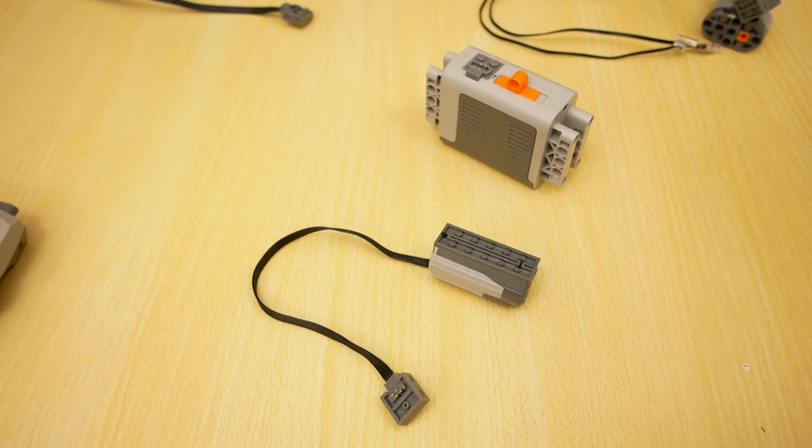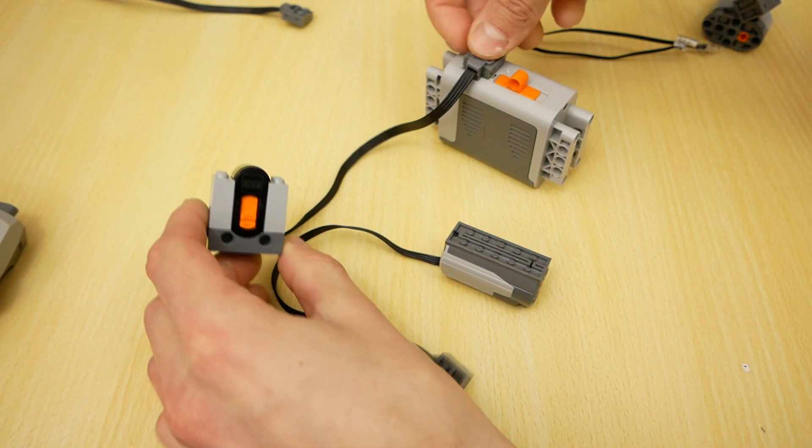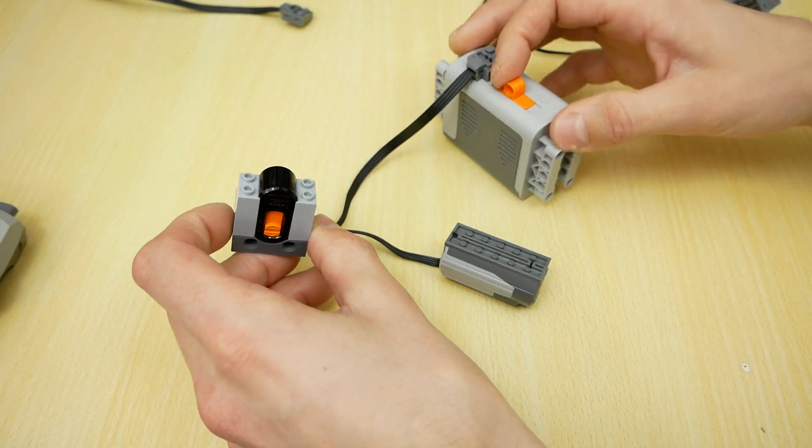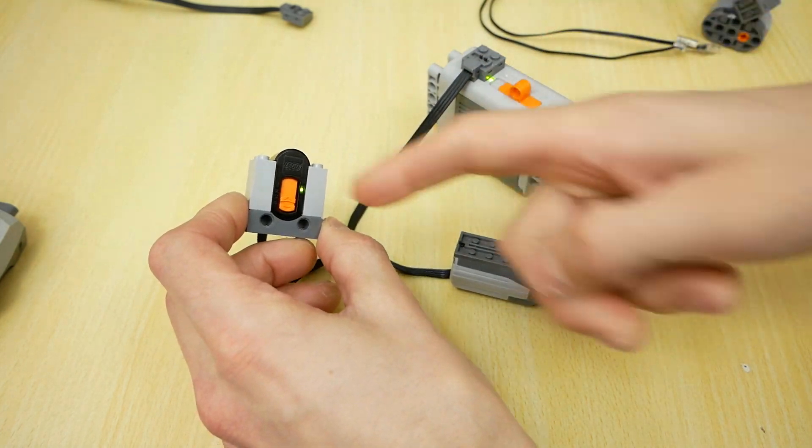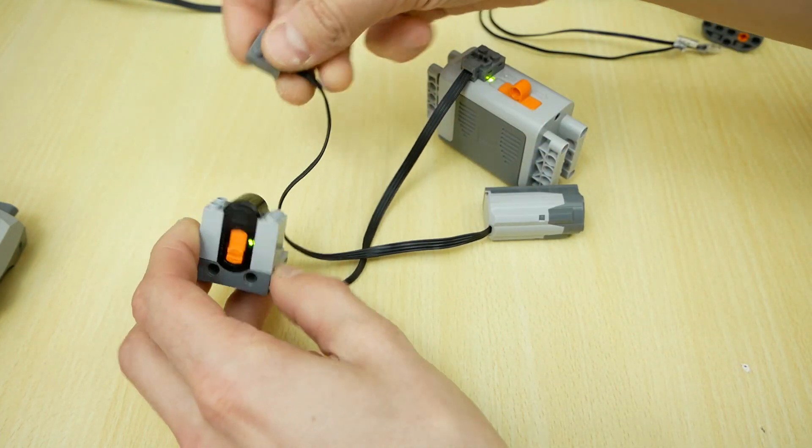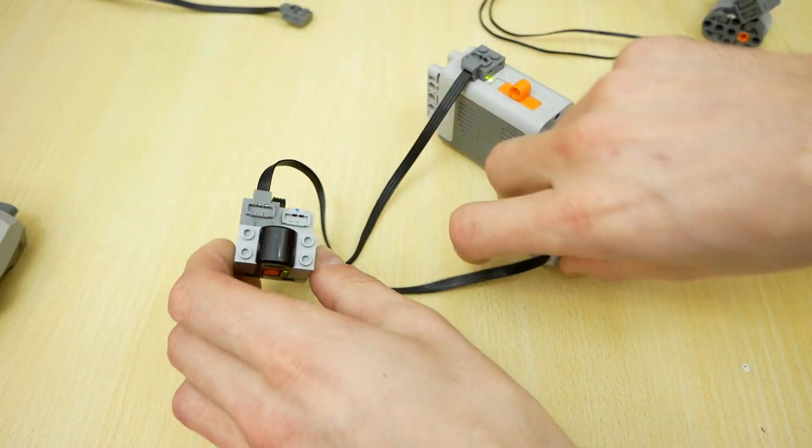To remote control, I have to use infrared receiver. I connect it to the battery box. Receiver is on. And now I'll connect the motor.